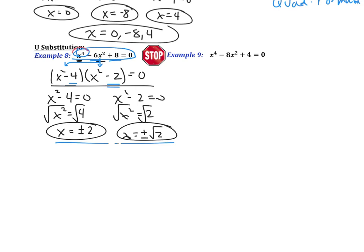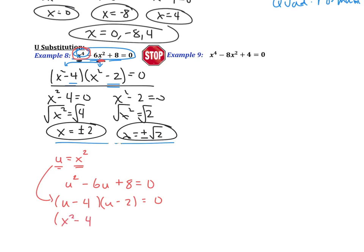Another possibility is u-substitution: you change the equation into a quadratic. Take half of the leading exponent — half of 4 is 2 — so let u equal x squared. Then x squared squared is x to the fourth, which equals u squared. So the equation becomes u squared minus 6u plus 8 equals 0. Factor as u minus 4 times u minus 2. Then change u back to x squared to get x squared minus 4 times x squared minus 2 equals zero, and use the zero product property to solve.